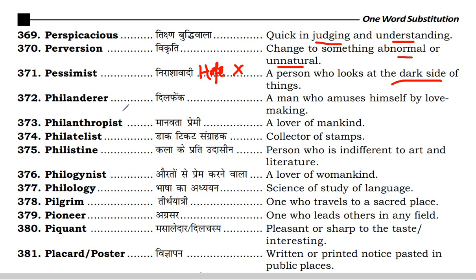Next is philanderer. Philanderer is a man who amuses himself by love-making. Philanthropist is the lover of mankind — we can underline that. Philanderer is just a philanderer, while philanthropist relates to love of mankind.